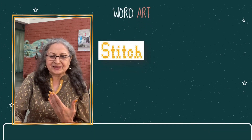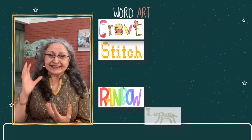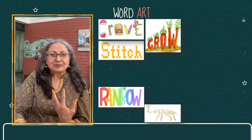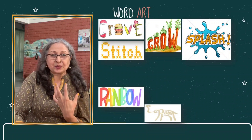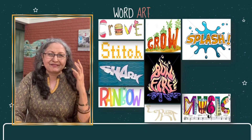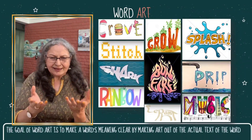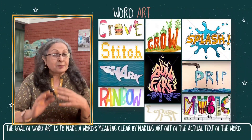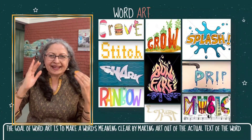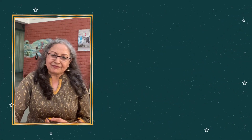There is another idea: word art. The word 'stitch' is written in cross-stitch, 'rainbow' in rainbow colors, 'crave' as in a craving for food — with teeth and a hamburger. 'Elephant' as an elephant, 'grow' as growth, 'splash' as the way water splashes, 'music' with instruments of music, 'shark' in the shape of a shark, 'on fire,' 'drip' as in water dripping, and so on. This is what arts integration really is. The goal of word art is simply to make the meaning clear by creating art out of the actual text of the word.